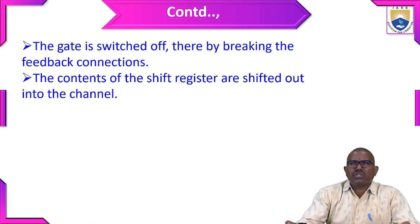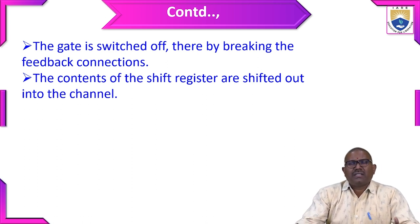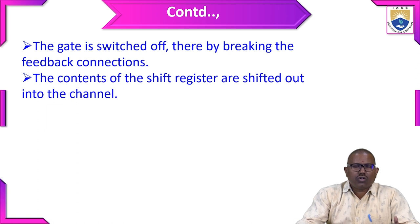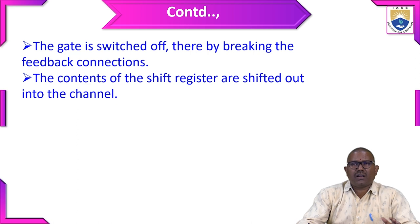The gate is switched off, thereby breaking the feedback connections. When the gate is closed, message bits enter into the shift registers. When the gate is open, no message bits are entered into the register. The contents of the shift registers are then shifted out into the channel. This is the operation of the feedback shift register.